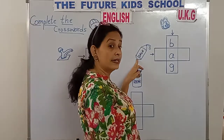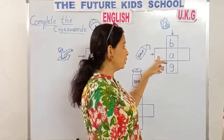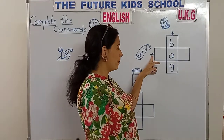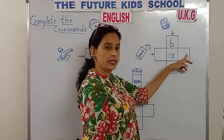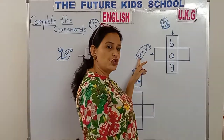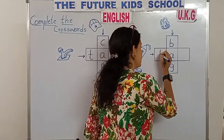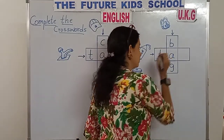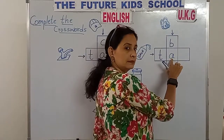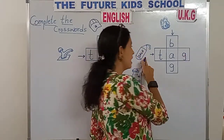This is a tag. Let's write the word from this side. See, the arrow is pointing this side. T-A-G spells tag. T-A-G. Tag.